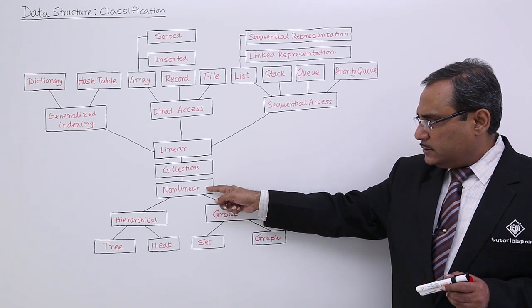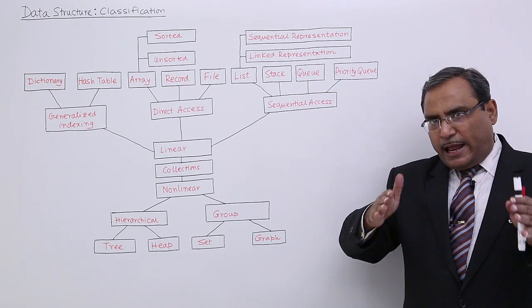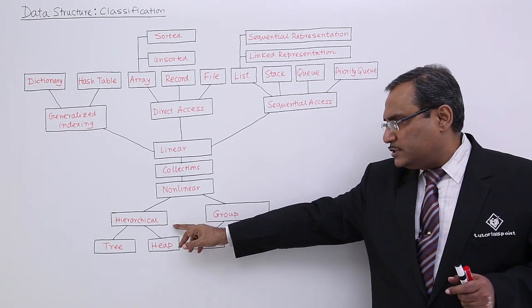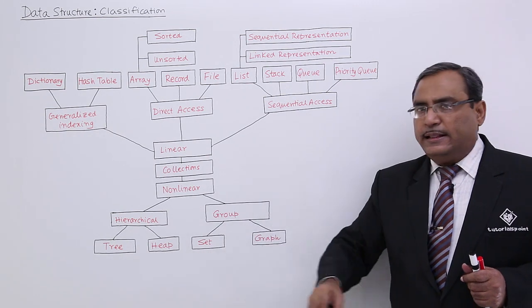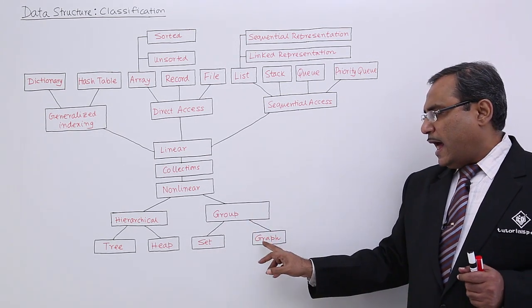In case of non-linear structures, we have hierarchical, which means something tree-like. These hierarchical data structures include trees and heaps. For groups, we have sets and graphs.